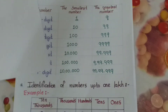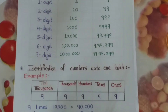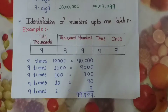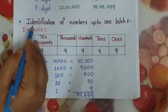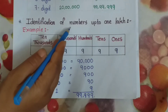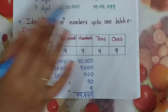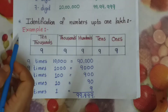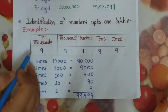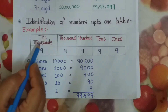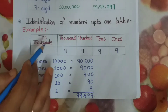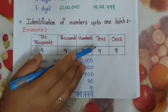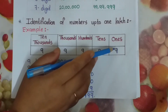Now see — identification of numbers up to 1 lakh. We will see one example. A table is given with place values: 10,000s, 1,000s, 100s, 10s, and 1s.